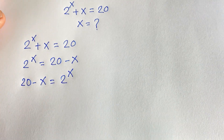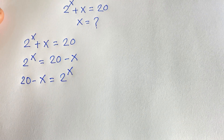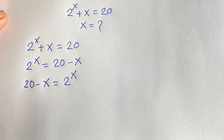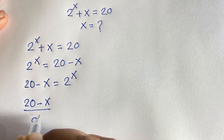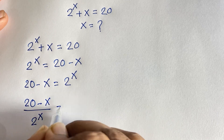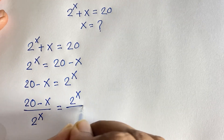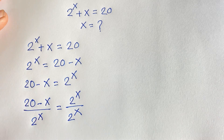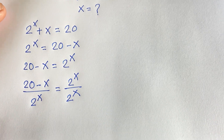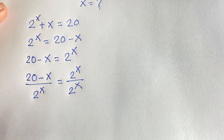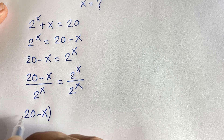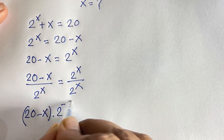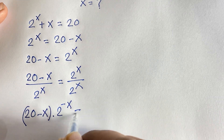Now I divide both sides by 2 to the power x. So I can say 20 minus x divided by 2 to the power x is equal to 2 to the power x divided by 2 to the power x. This equation becomes 20 minus x times 2 to the power minus x is equal to 1.